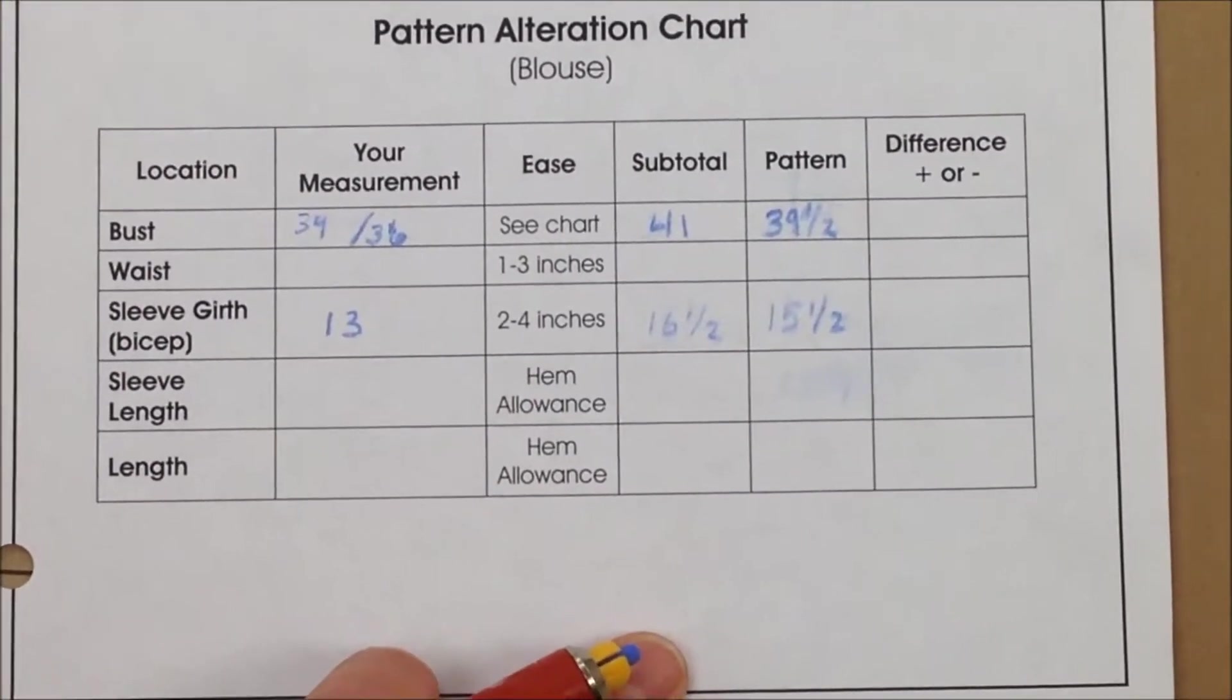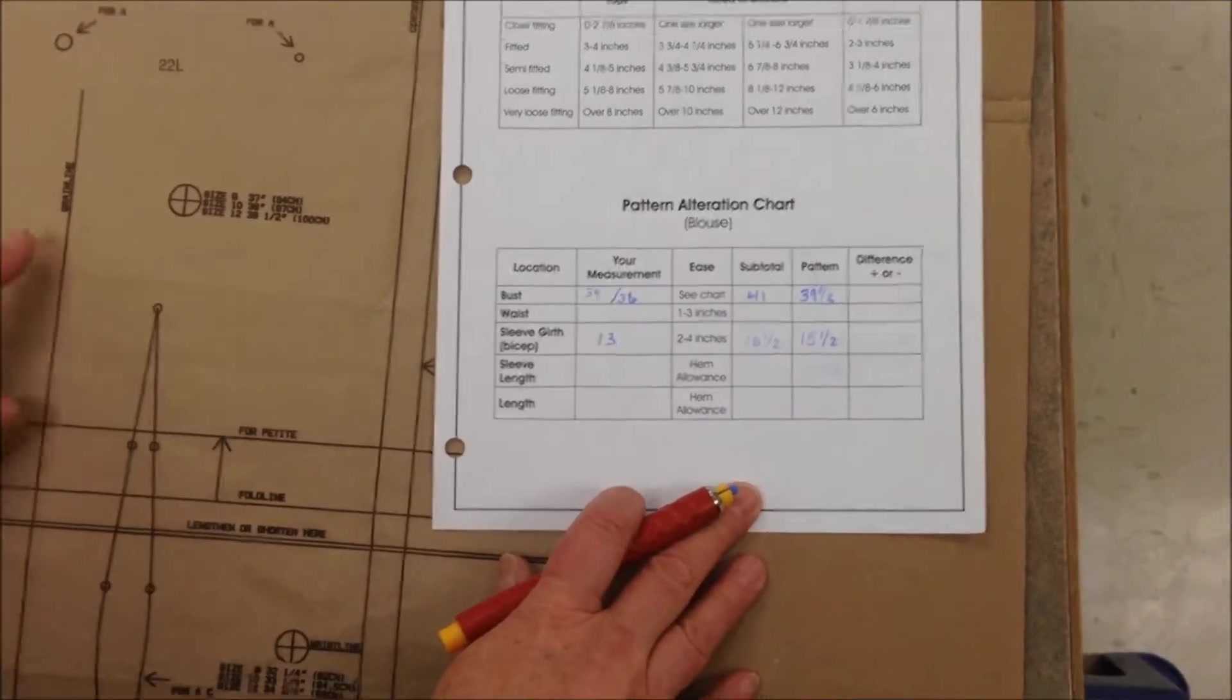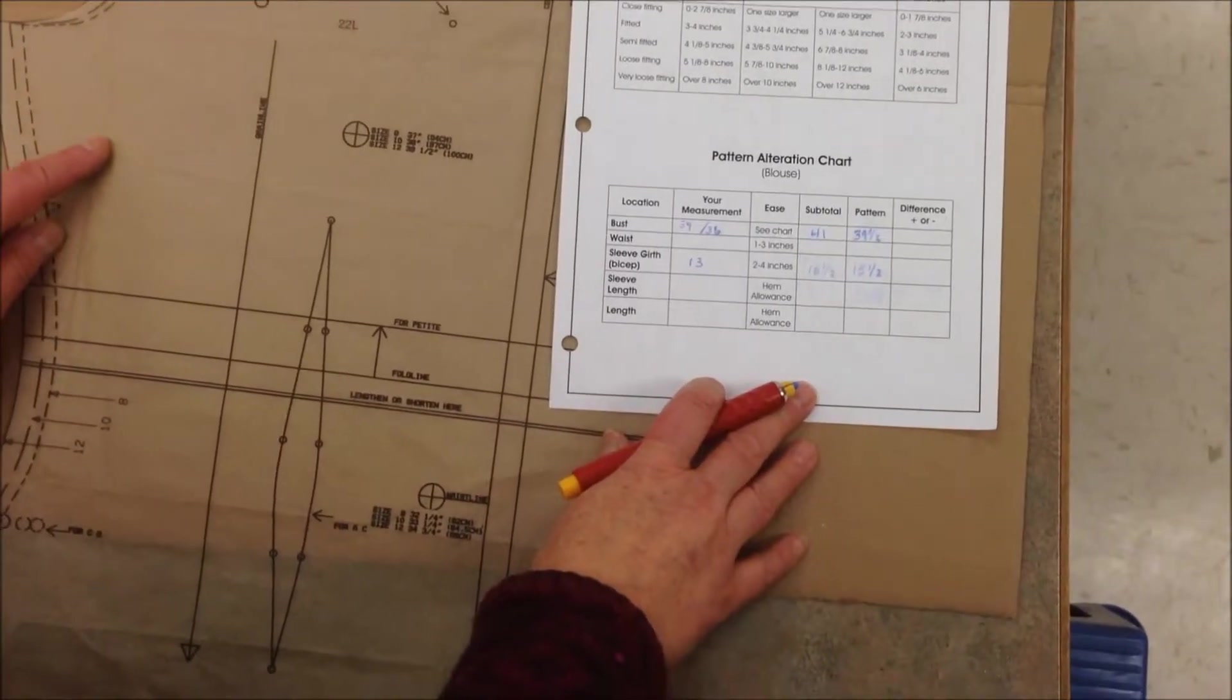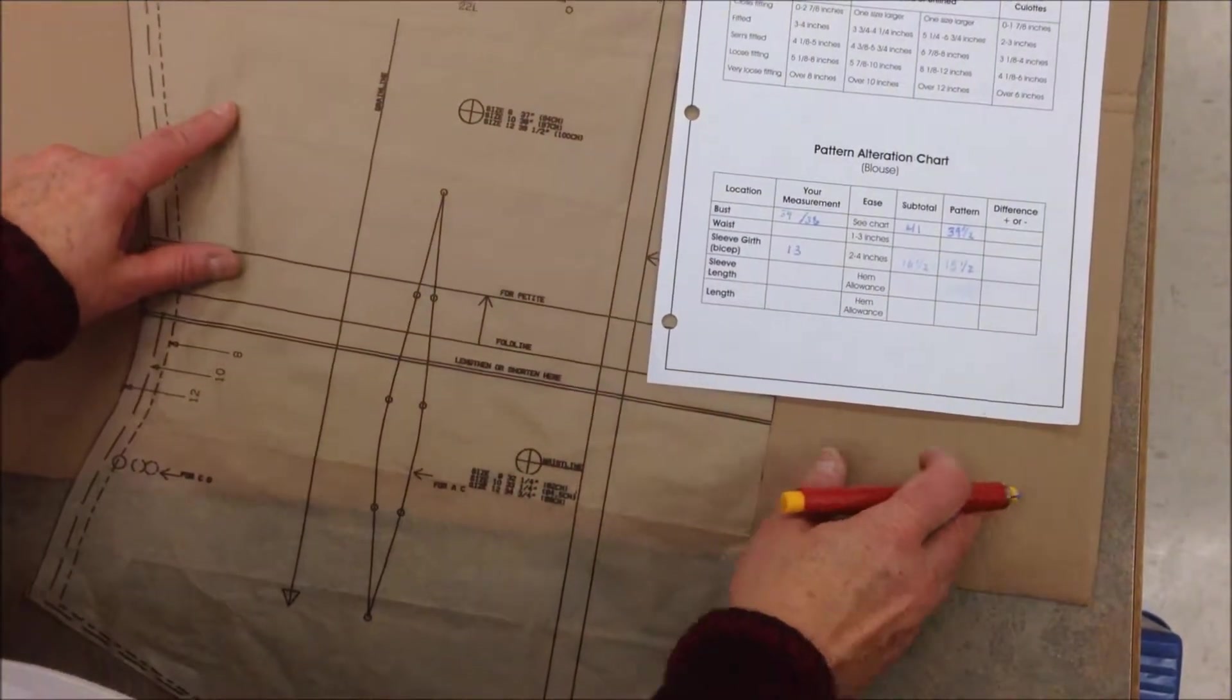On this particular pattern we don't have a bust dart, but if you're fuller than a B-cup it really is best to have an underarm or bust dart because you'll get a better fit and it will just fit you much better.